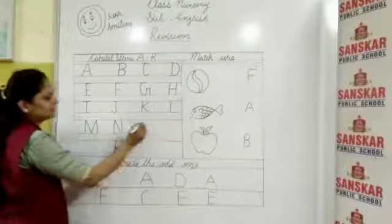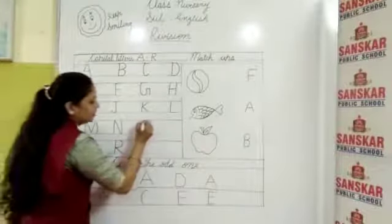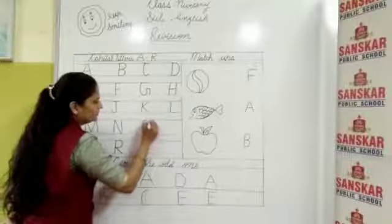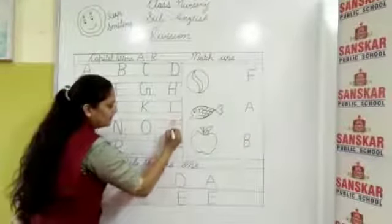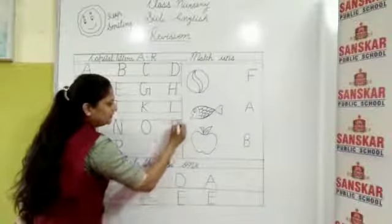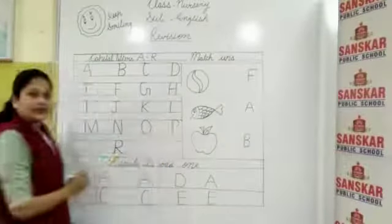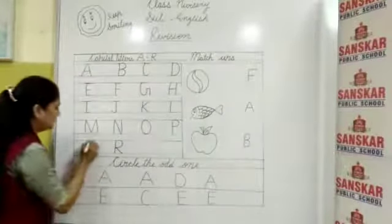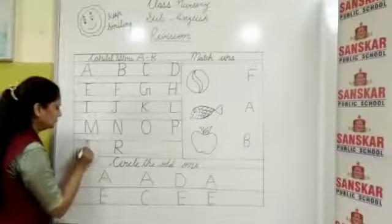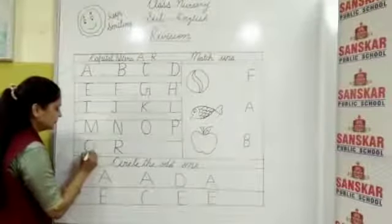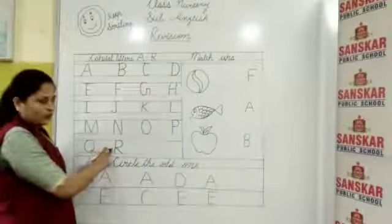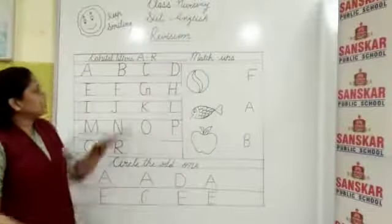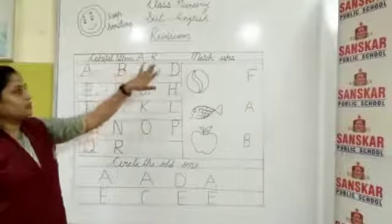Next is capital letter O. After O, write down capital letter P. And after P, capital letter Q. Okay? And next is capital letter R. Okay my students? These are capital letters A to R.